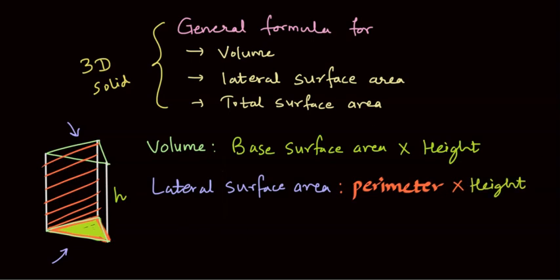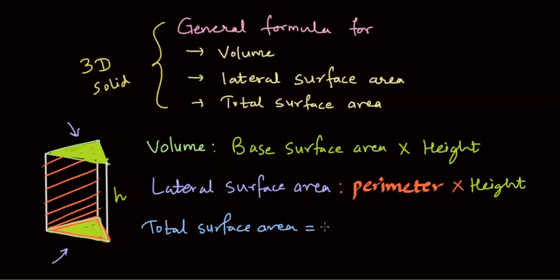What about total surface area? Total surface area is found by adding the top and bottom surface areas to the lateral surface area. Since the top and bottom surface areas are equal, total surface area equals lateral surface area plus two times the base surface area.